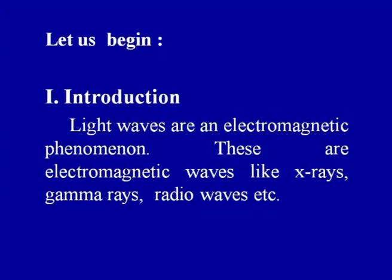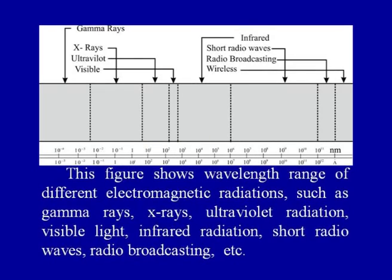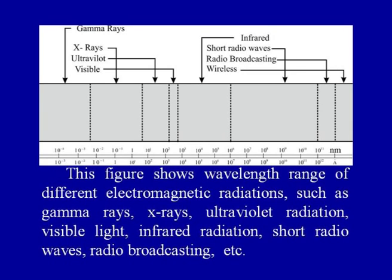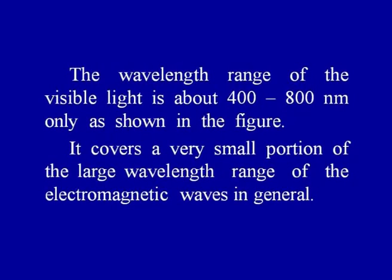Light waves are an electromagnetic phenomenon. These are electromagnetic waves like X-rays, gamma rays, radio waves, etcetera. This figure shows the wavelength range of different electromagnetic radiations such as gamma rays, X-rays, ultraviolet radiation, visible light, infrared radiation, short radio waves, and radio broadcasting. The wavelength range of visible light is about 400 to 800 nanometers only, as shown in the figure — it covers a very small portion of the large wavelength range of electromagnetic waves in general.